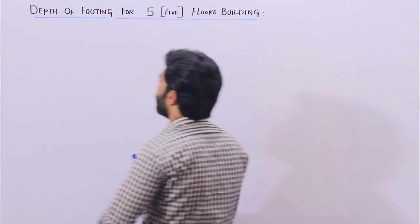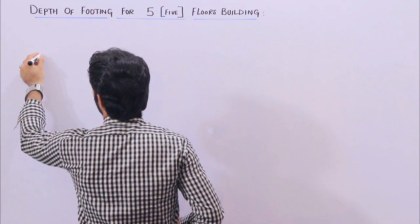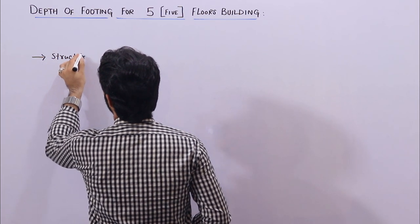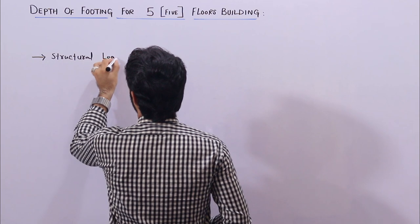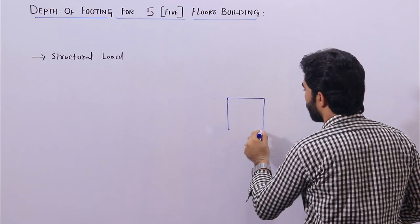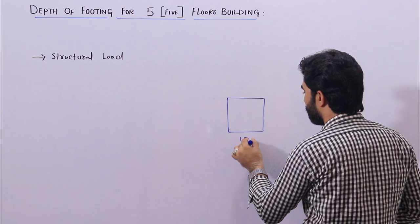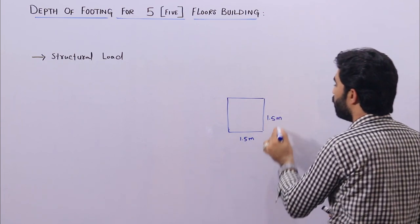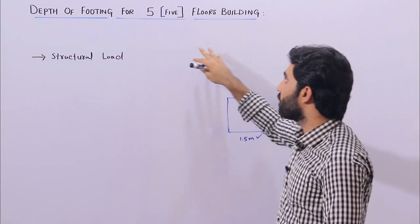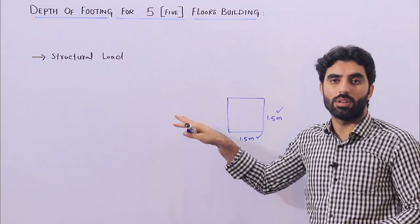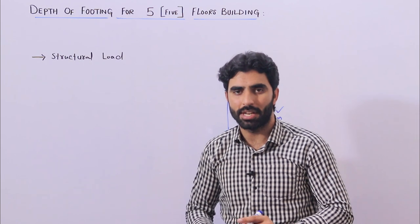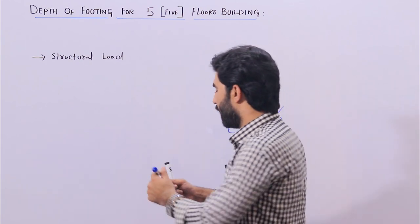To take the size of footing, remember we have many factors. The first and very important one is structure load — what is your structure load for a five-story building? G plus four, that is five stories. Structure load calculation is very important and it is not easy to determine on your own.